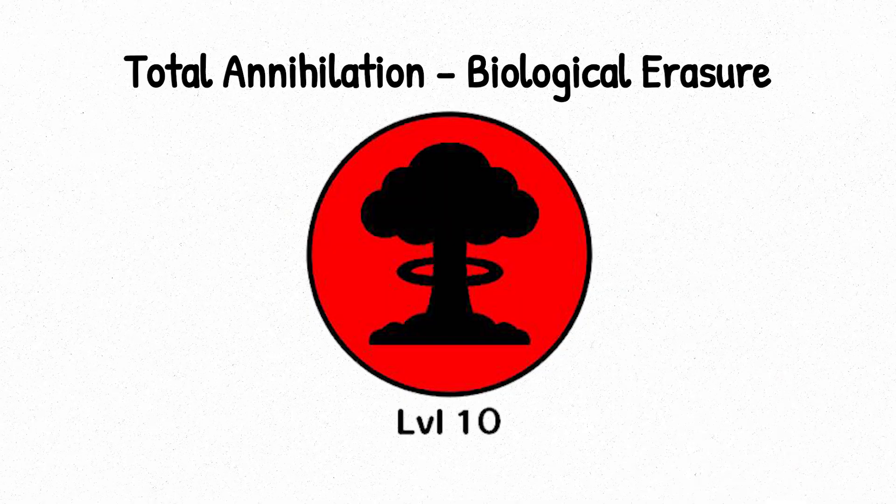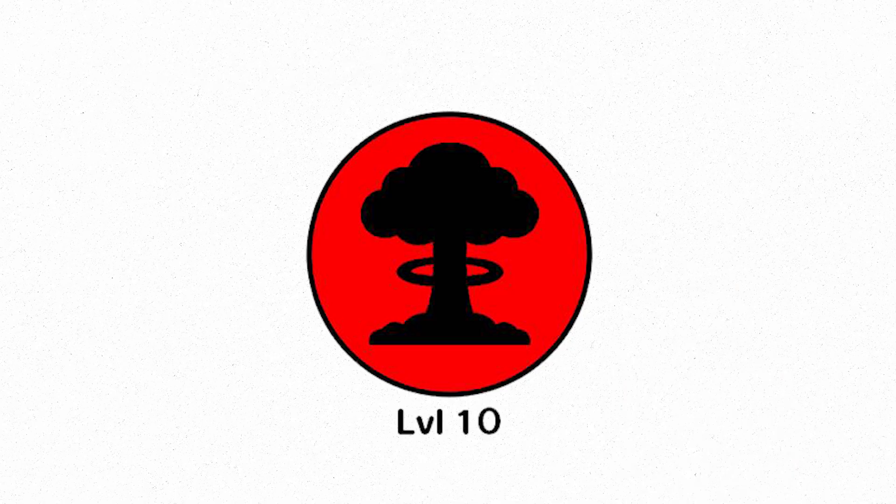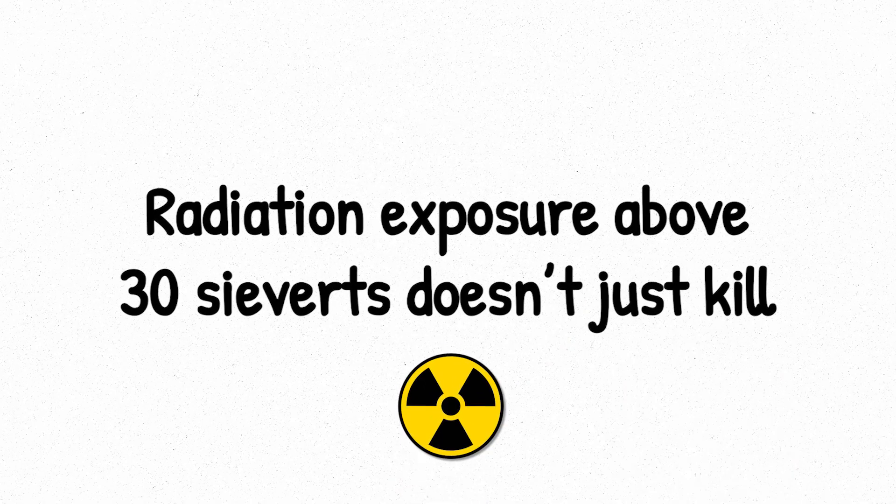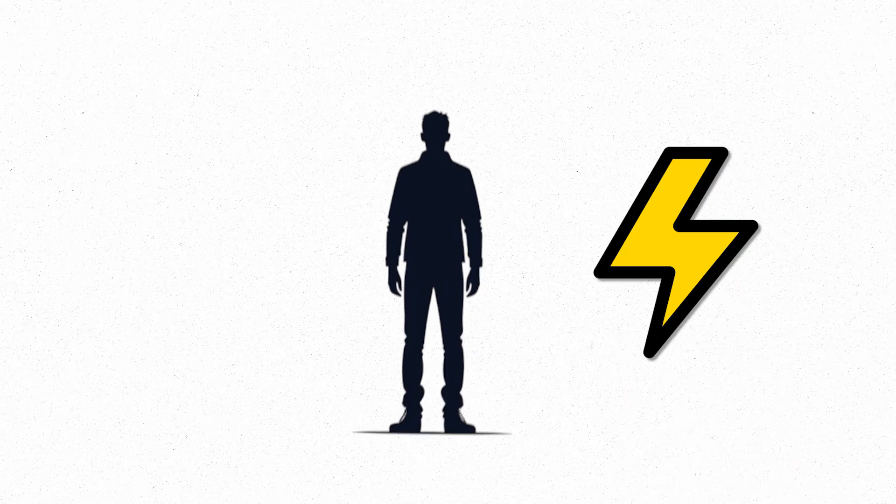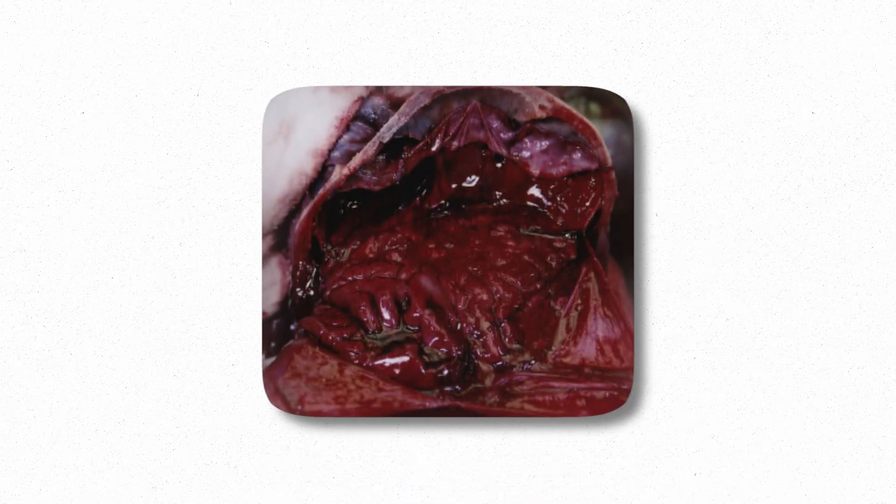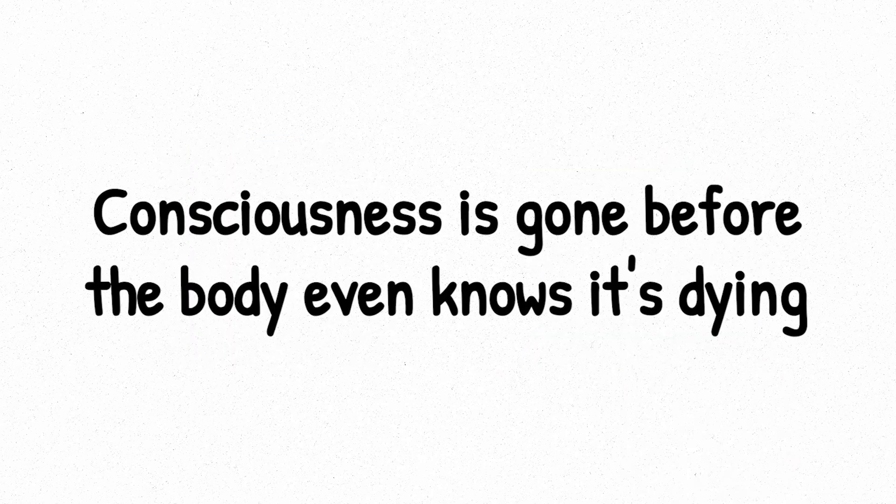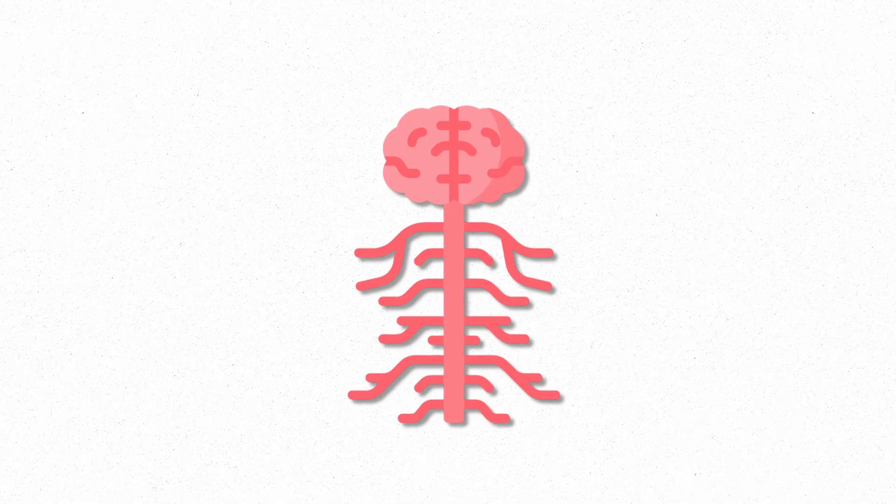Level 10. Total Annihilation. Biological Erasure. Level 10 is the absolute ceiling. Radiation exposure above 30 sieverts doesn't just kill. It erases. At this level, the energy released is so intense that the human body isn't simply overwhelmed. It's destroyed on a structural level. Within milliseconds, internal organs begin to liquefy. Blood vessels rupture across the body. Skin and muscle tissues are burned from the inside out. Consciousness is gone before the body even knows it's dying. There is no pain because the nervous system is instantly disabled.